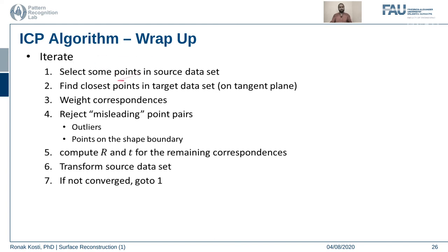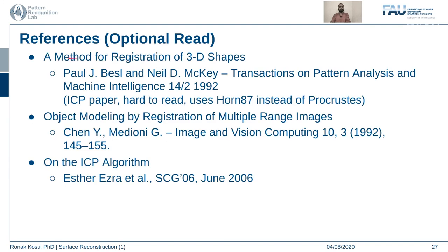To wrap up the ICP algorithm: we select points in the source dataset, find the closest points in the target dataset on the tangent plane, weigh all correspondences, and reject or down-weight misleading point pairs such as outliers or boundary points. We compute rotation R and translation T for the remaining correspondences using the Procrustes method, transform the source dataset closer to the target, compute the error metric, and if converged by predefined criteria, we are done; otherwise we repeat the process.